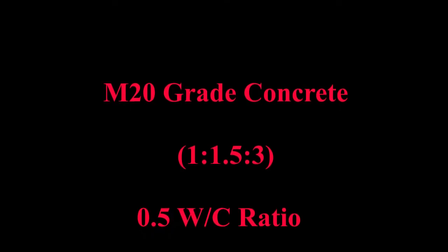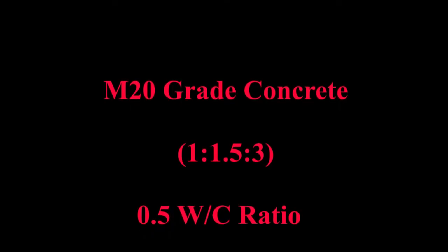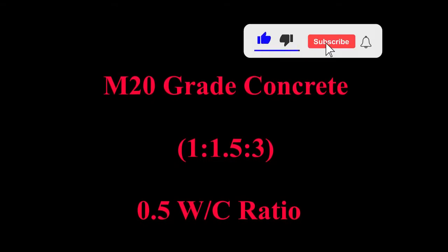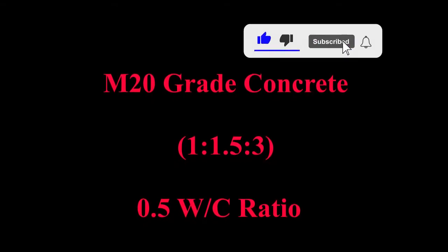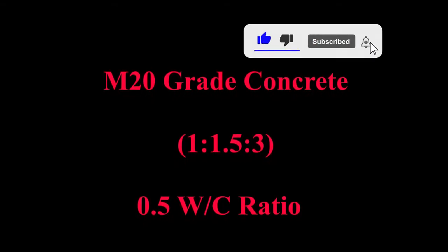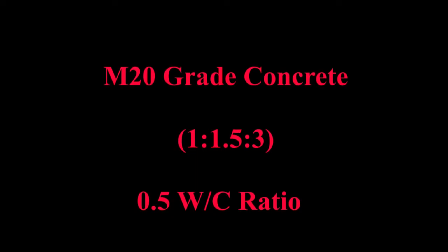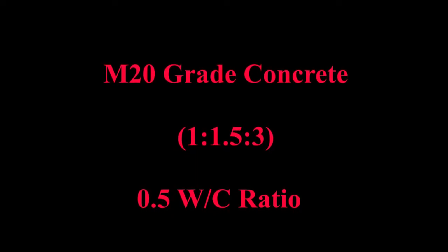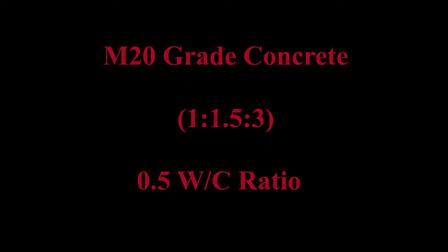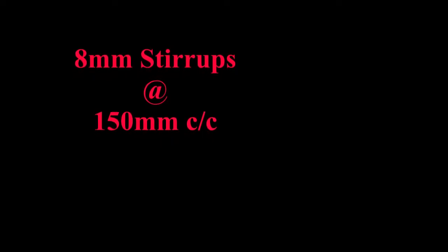Use of M20 grade concrete is recommended for the structure, with a ratio of 1 part cement to 1.5 parts sand to 3 parts aggregate with 0.5 parts water by volume. Also recommended is the use of 8 mm stirrups at a spacing of 150 mm center to center throughout the length of the column.